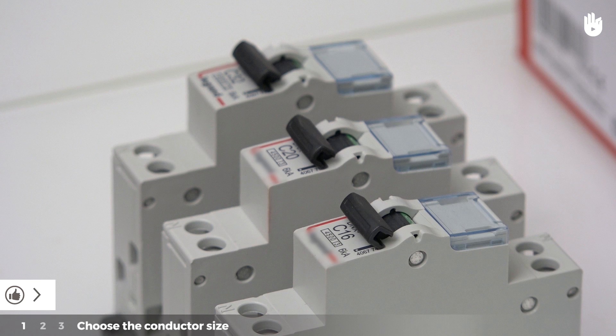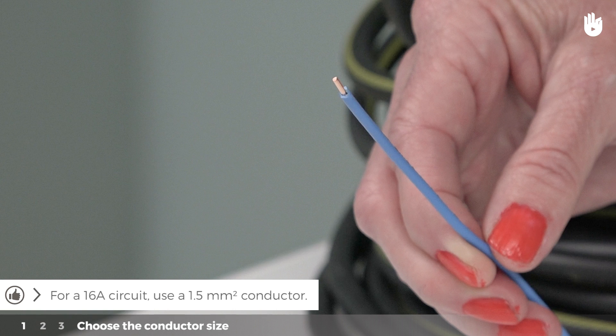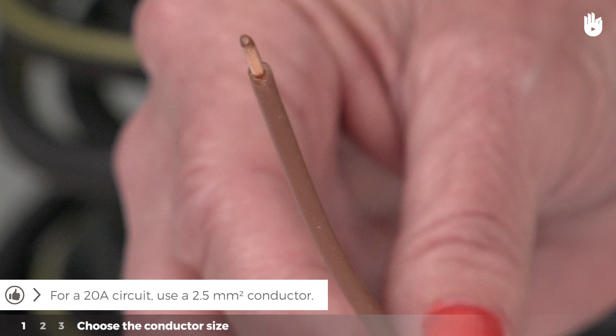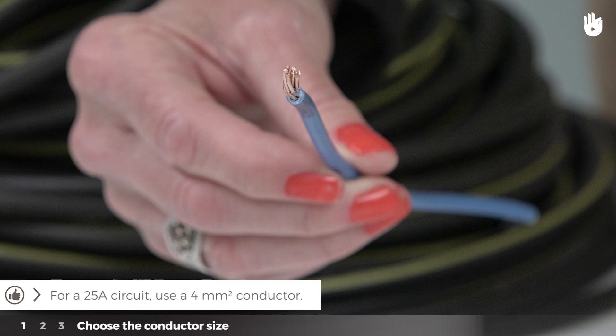If the maximum load allowed in the circuit is 16 amperes, a 1.5 mm conductor size will be adequate. For 20 amperes, choose a conductor with a cross-section of 2.5 mm squared. For 25 amperes, a 4 mm squared conductor.